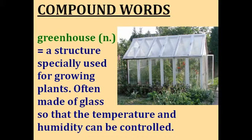A greenhouse is a structure especially used for growing plants. You'll see these used in gardens — I think this greenhouse in the picture has some tomatoes inside it. It's used for growing flowers and vegetables, and a greenhouse is usually made of glass so that the temperature and humidity inside can be controlled.